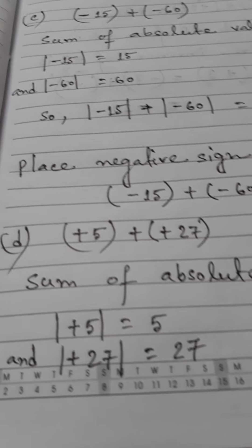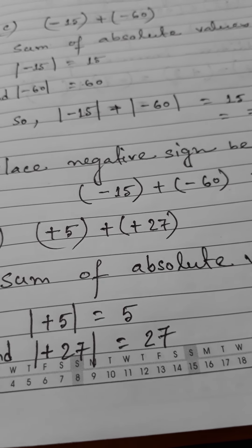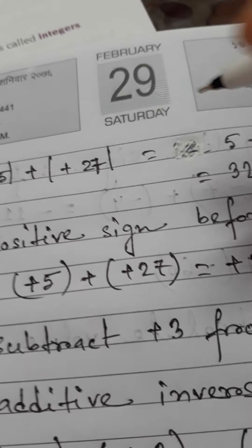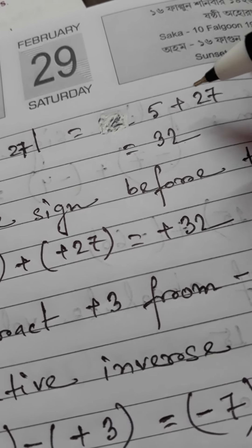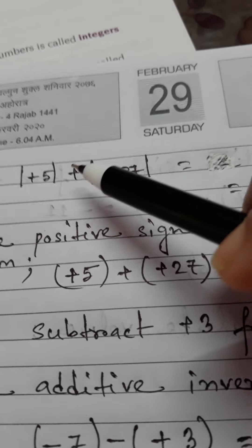Question D: positive five plus positive twenty-seven. Again, take the sum of the absolute values — absolute value of plus five is five, and absolute value of plus twenty-seven is twenty-seven. Add them: twenty-seven plus five equals thirty-two. Since both numbers are positive integers, place the positive sign before the sum. So plus five plus plus twenty-seven equals plus thirty-two.